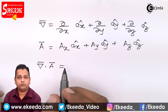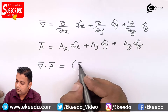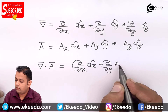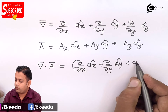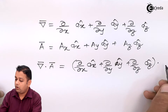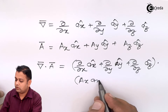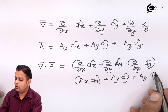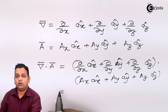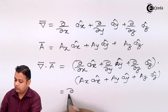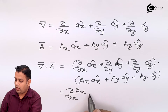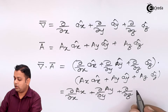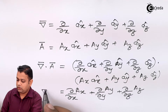So del-bar dot of A-bar: here we take the dot product of both brackets — del/del-x ax-cap plus del/del-y ay-cap plus del/del-z az-cap — dot product with ax ax-cap plus ay ay-cap plus az az-cap. The dot product between these two brackets will give us del/del-x of capital Ax plus del/del-y of capital Ay plus del/del-z of capital Az.